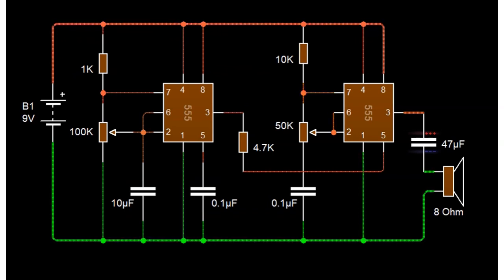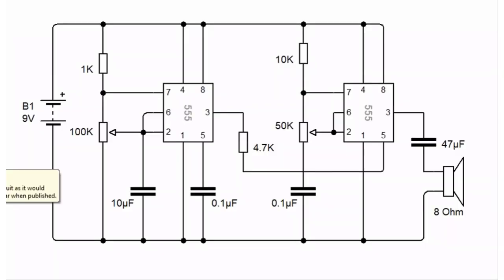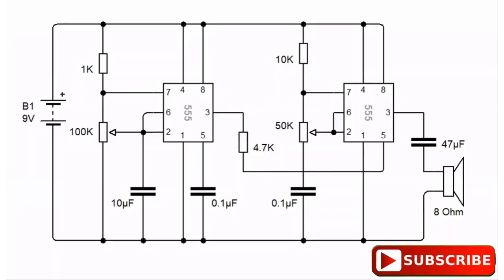The output of the first IC is connected to pin 5 of the second IC, which in result modulates the output of the second IC according to its output pulse. The output of this IC is connected to an 8 ohm speaker via a 47 microfarad capacitor, which creates a tone that resembles the sound exactly like a police siren.